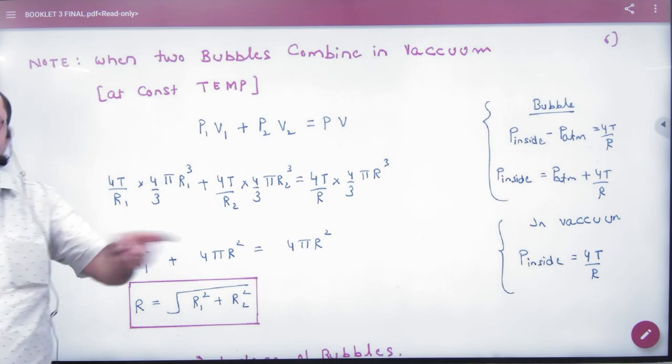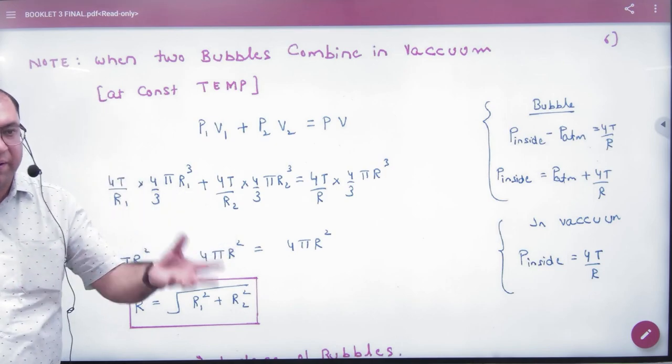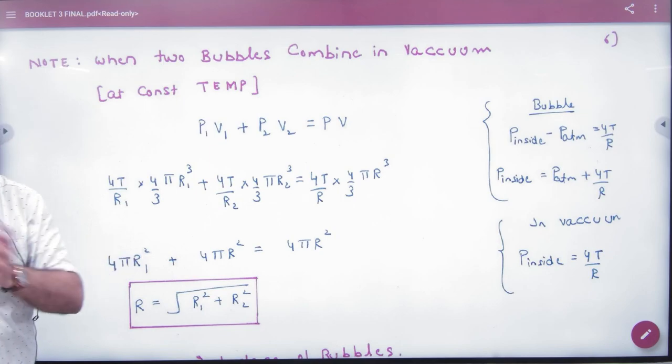The first rule was to equate the volume. When water drops combined, we had to eliminate the ratio in the radius.